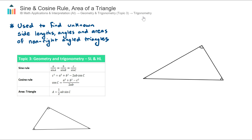We're now moving on to non-right-angle triangles. Up until this point you've been looking at right-angled triangles — triangles that have a right angle, a hypotenuse, and two shorter side lengths — and you've been using techniques such as Pythagoras' Theorem or the three trig ratios sine, cosine, and tan to find unknown side lengths and angles, and the basic formula for the area of a triangle, half base times height.